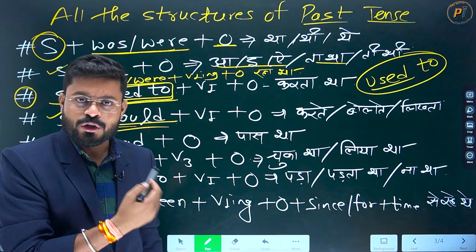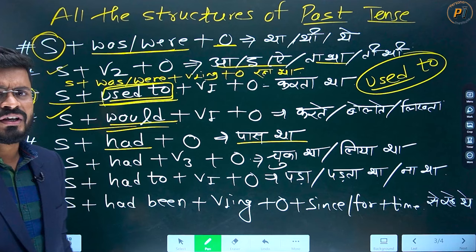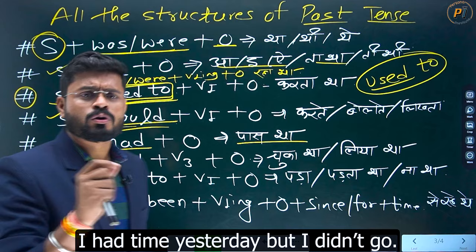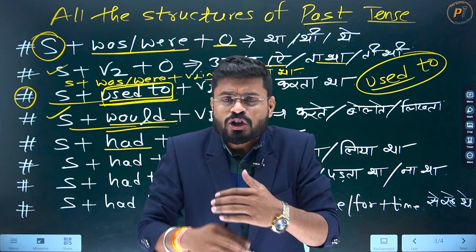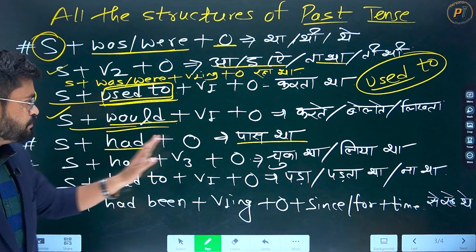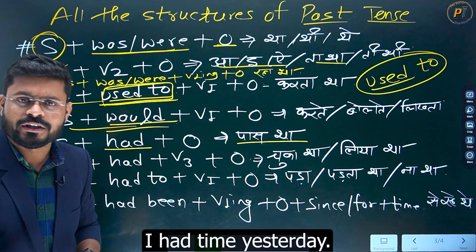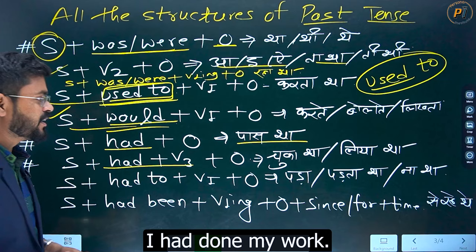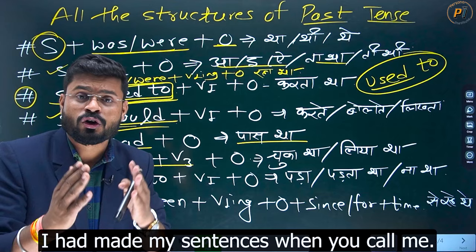Iske baad next — jo bhi cheez aapke paas thi: mere paas kal samay tha — I had time yesterday. But I didn't go. Ab past perfect — I had done my work, I had gone there, I had made my sentences when you called me. Jo kaam aap kar chuke the, past mein ho gaya tha, wahan 'had' lagana hai. Aur ek confusion bohut zyada create karta hai students mein — V2 aur 'had' ke beech mein.